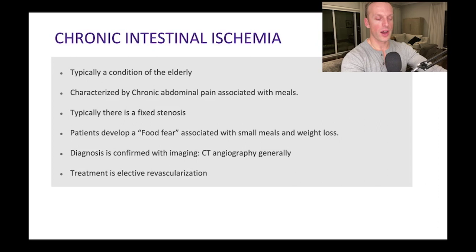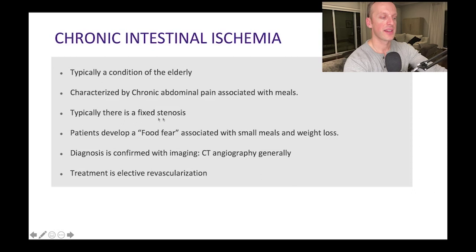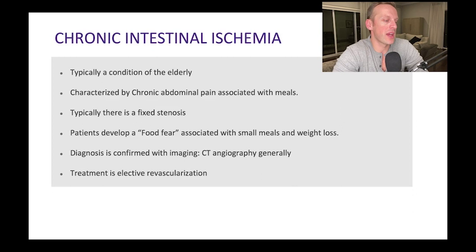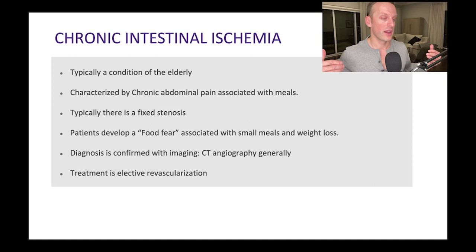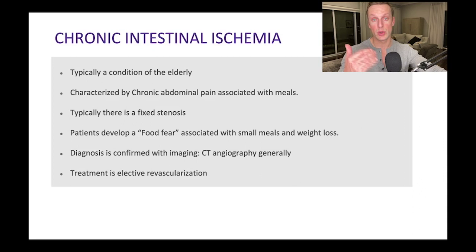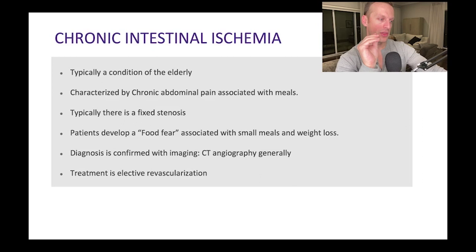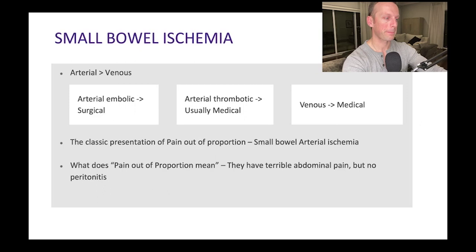Chronic intestinal ischemia is a condition of the elderly with high atherosclerotic burden and a fixed stenosis. The typical presentation is pain associated with meals — they develop food fear, eat small meals, and have progressive weight loss. Every time they eat, they feel terrible and develop pain. We diagnose with CT angiogram. When we do decide to operate, it's booked electively as a revascularization (bypass) procedure, bypassing the proximal stenosis.